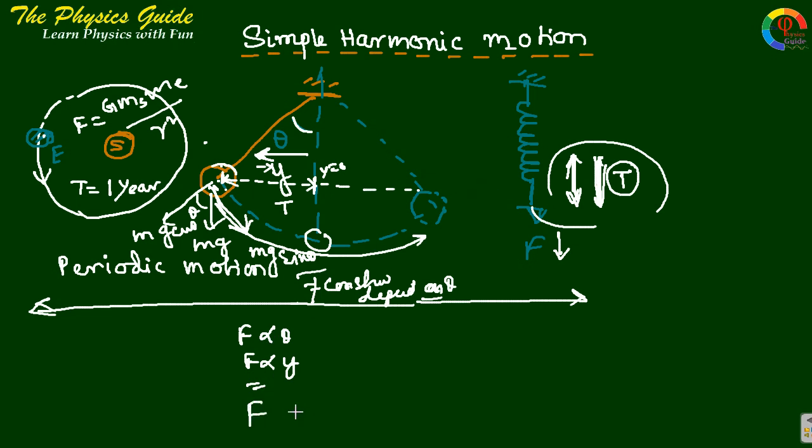So we can take F as proportional to minus y, or simply F equals minus k y. This is the basic equation.